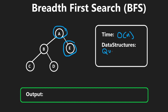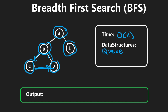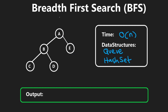BFS is usually not implemented recursively, so it typically requires a queue data structure — usually a double-ended queue. Since a graph can have cycles, just like in DFS, we use a hash set to detect duplicate nodes and avoid getting stuck visiting the same node twice.